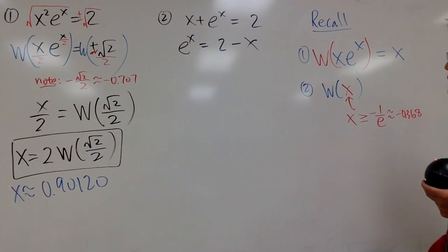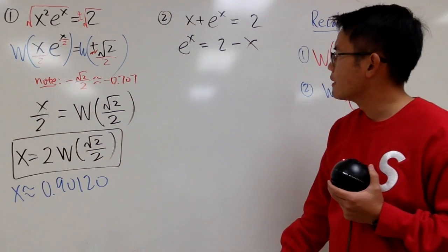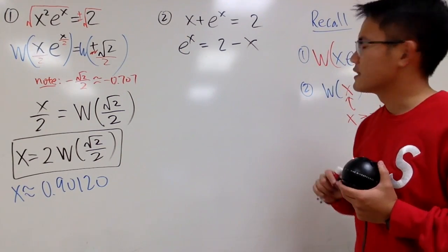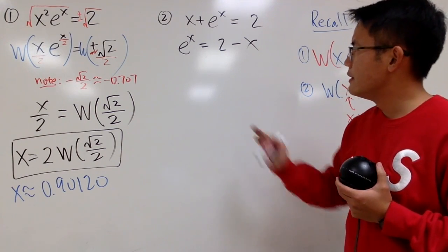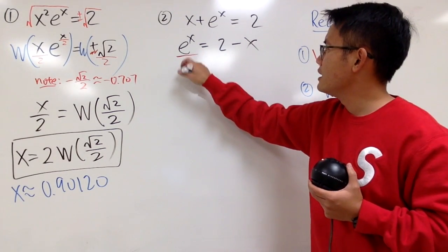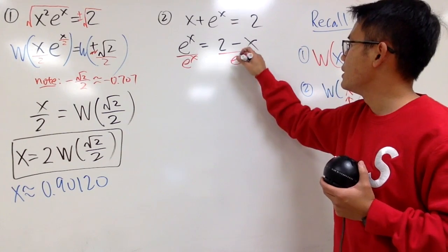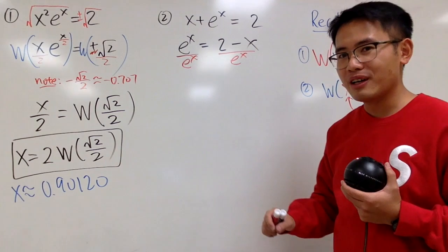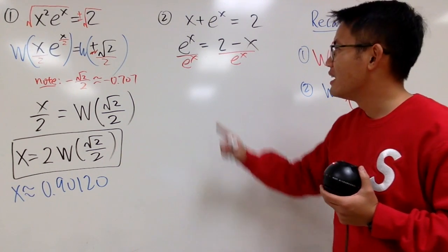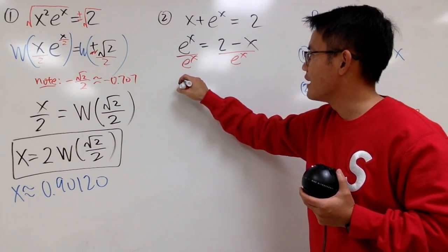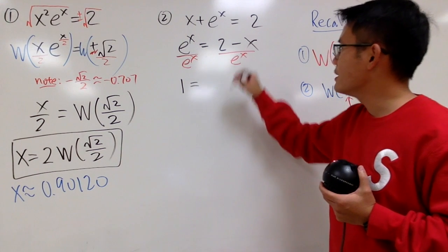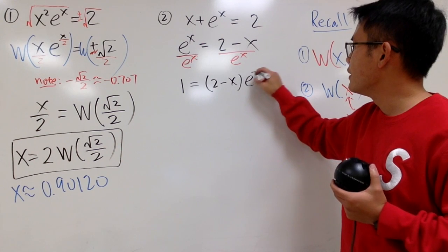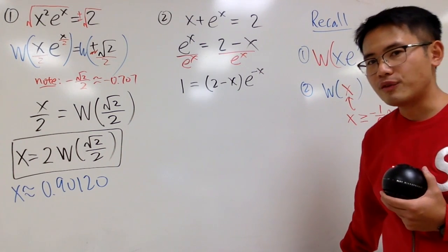And somehow, I want to get this to a multiplication. I'm not going to multiply anything right here. This is the negative x. Let me divide both sides by this guy, e to the x, which is the same as saying, multiply by e to the negative x. So somehow, I match the negative x. On the left-hand side, I just have a nice number 1. And then on the right-hand side, let me put this down as 2 minus x. And let me write this as e to the negative x. So far, so good, yeah?